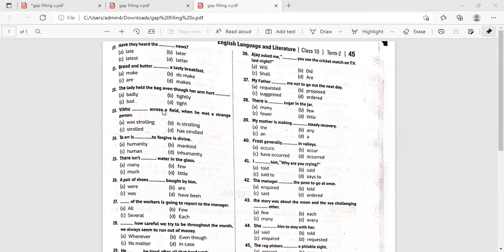Vibhu dashed across the field when he met a strange person. So something was happening when the next took place. Vibhu was strolling across a field when he met a strange person. Very nice. Very good. Ulvi is giving the responses today.